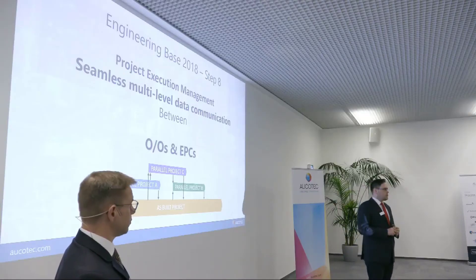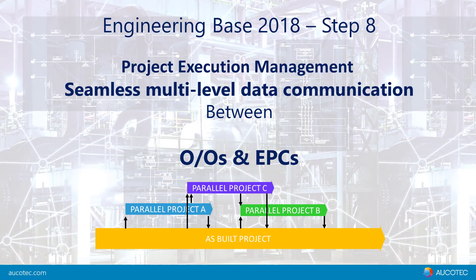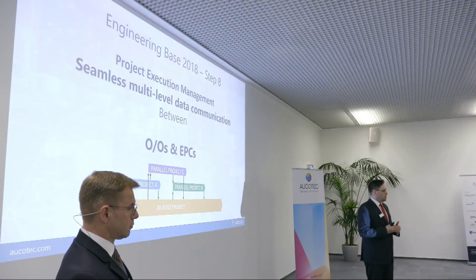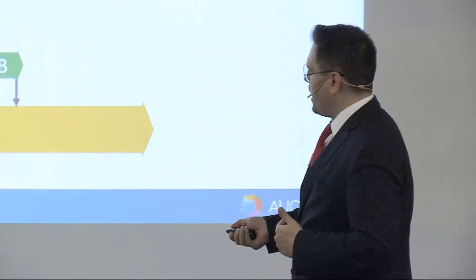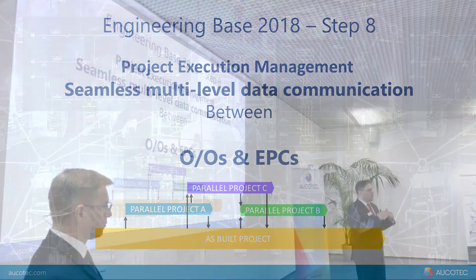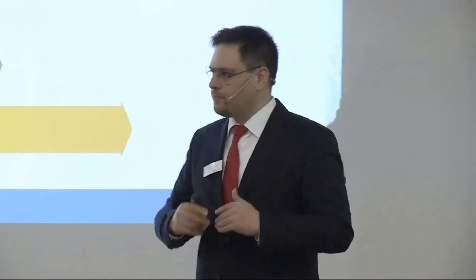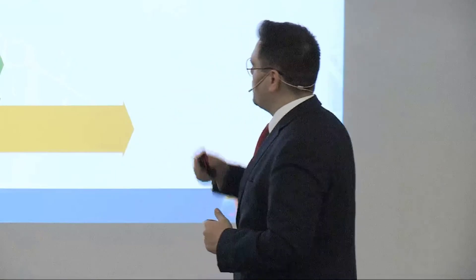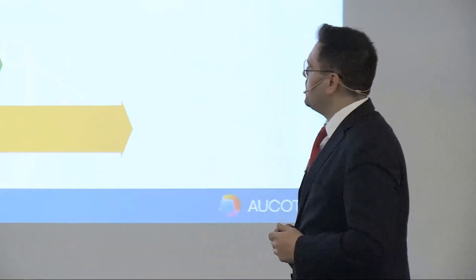Step eight: we created a project execution management. Owner operators and EPCs can seamlessly communicate together based on data and documents. For example, you have an as-built project, a parallel project A, and a parallel project C — with data coming from as-built and from project A. All EPCs together can communicate data and see the current project status. This supports as-built, as-is, and as-was — seamless multi-level data communication between owner operators and EPCs.